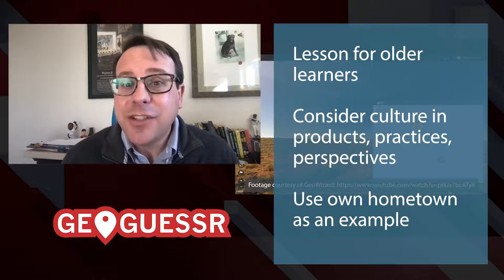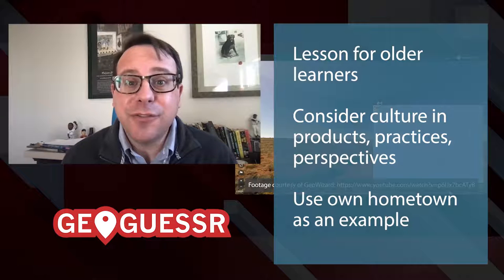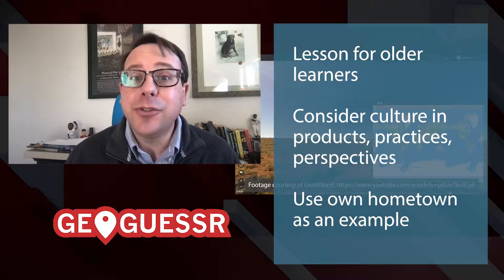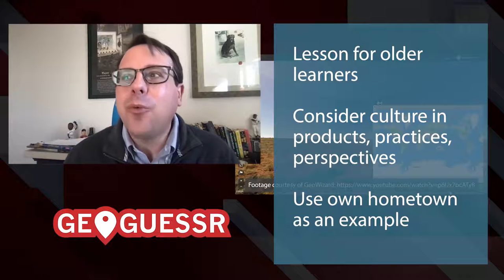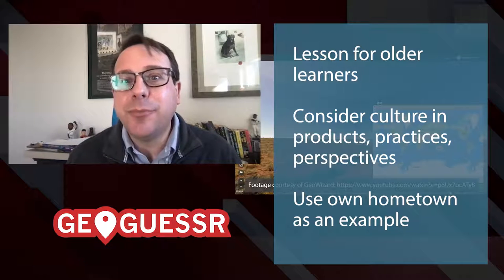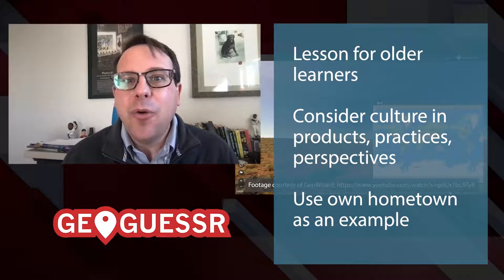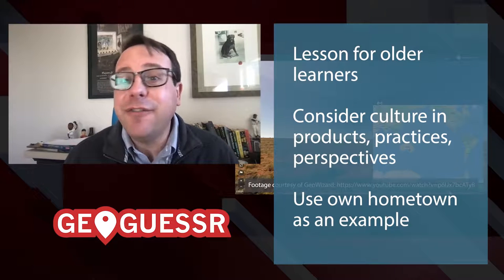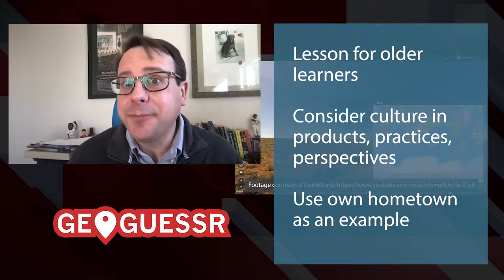One of the simple ways to help break down this idea of culture is to think about the products, the practices, and the perspectives that people have. We can start by having students find a street in their own neighborhood in Google Street View and maybe write out to a potential roommate what are some of the products, practices, or perspectives that are visible from that street view.